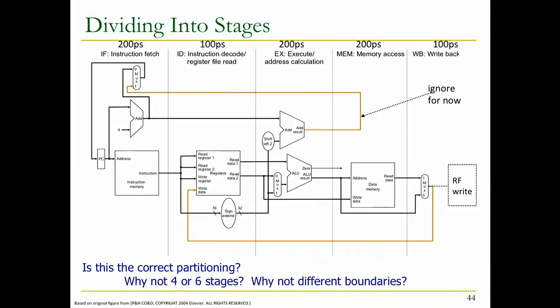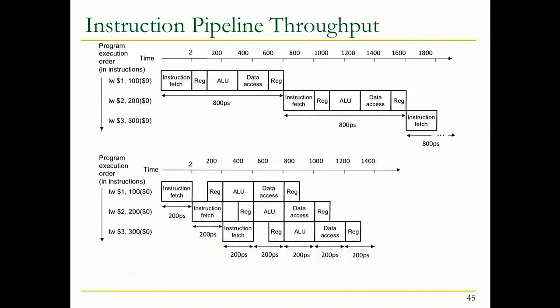Assuming we divide into stages: fetch, decode, register file read, execute/address calculation, memory access, and write back. There are many questions: is this the correct partitioning? Why not four or six stages? Why not different boundaries? That's where some of the art comes in. Maybe by increasing the number of stages you can get better performance because you divide things better. Increasing the number of stages also adds more overhead, but you could eventually end up with better performance.